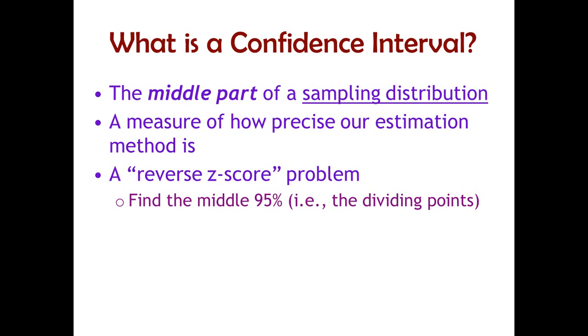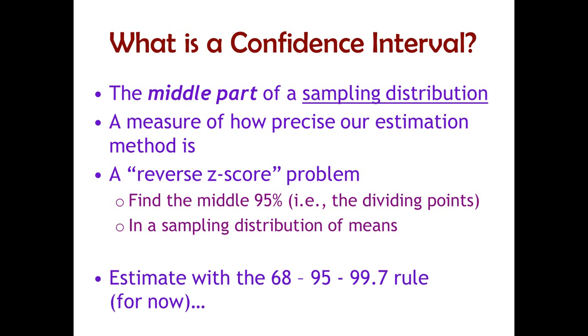So we just find the middle 95%. It's not always a 95% confidence interval, but that's the most common one. So we just find the points in raw score units on the number line that divide the middle 95% of the distribution from the rest, but in a sampling distribution of the means, always. This is the important thing to remember. Confidence intervals always happen in a sampling distribution of means, always.